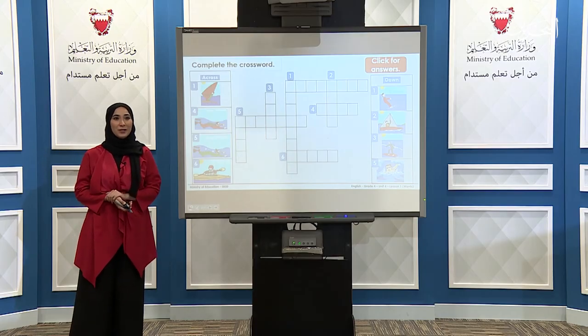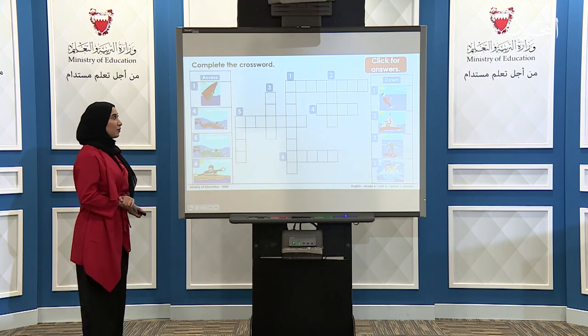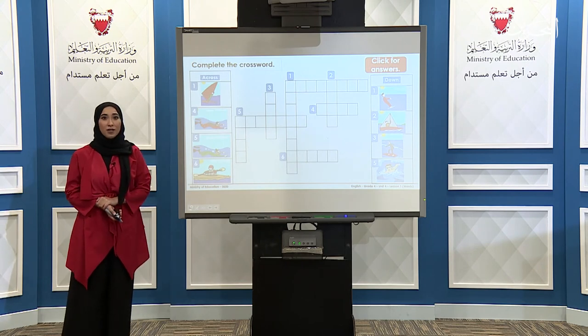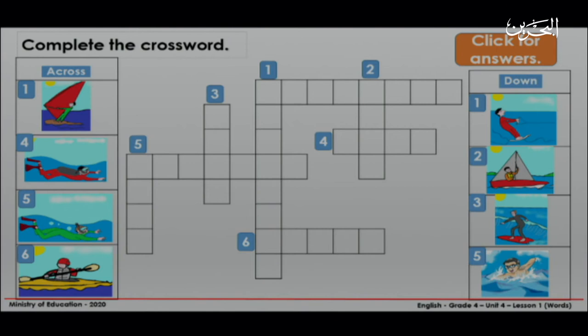Now you are going to complete this crossword puzzle. You are going to write down the water sports on your mini board. First you will start with the words across: number one, four, five and six. Then you will complete the water sports that go down: one, two, three and five. You have five minutes to complete this activity.